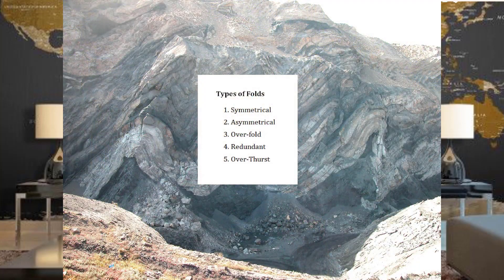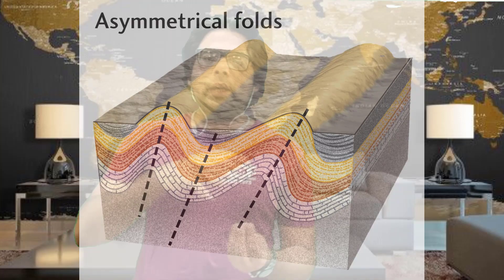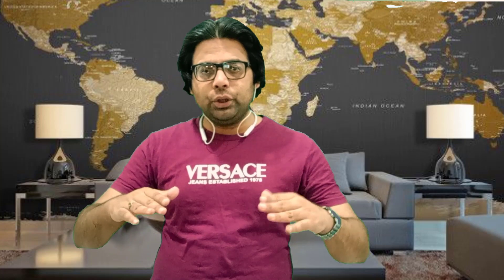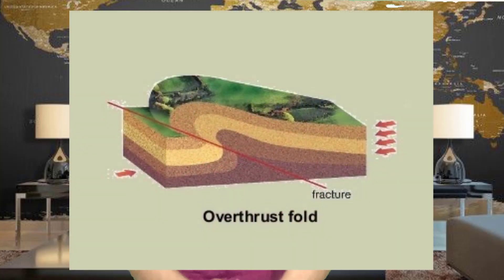There are five types of folds: symmetrical, asymmetrical, overfold, recumbent, and overthrust. When two limbs have equal steepness, it is called a symmetrical fold. If one limb is less steep than the other, it is asymmetrical. When one fold is pushed over another, it is called an overfold. When two limbs are nearly parallel, it is a recumbent fold. If the rock strata is broken because of the forces acting on it, it is called an overthrust.